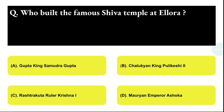Next question: who built the famous Shiva temple at Ellora? Option A: Gupta King Samudra Gupta, Option B: Chalukya King Pulakesi II, Option C: Rashtrakuta ruler Krishna I, Option D: Mauryan Emperor Ashoka. The correct answer is option C, that is Rashtrakuta ruler Krishna I.